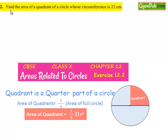Moving on to second question, find the area of a quadrant of the circle whose circumference is 22 cm.